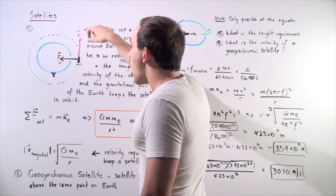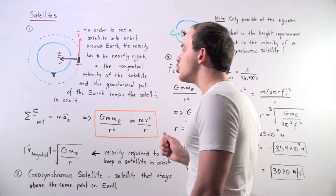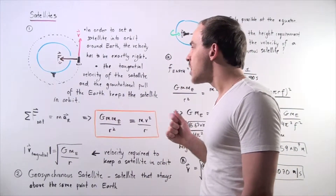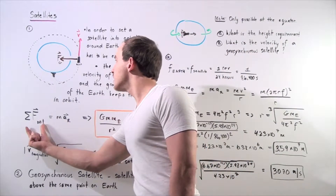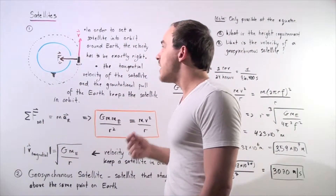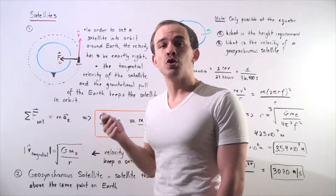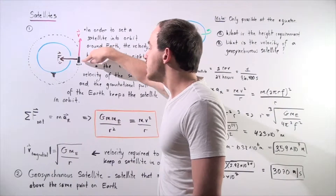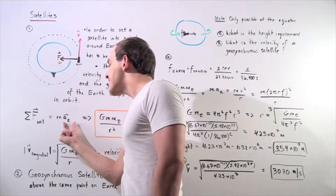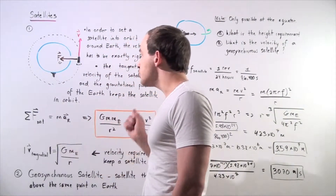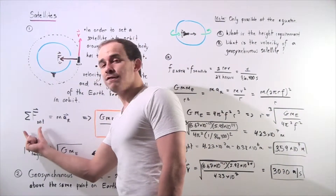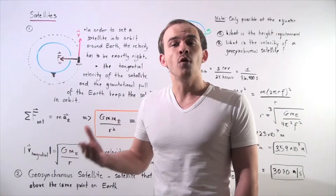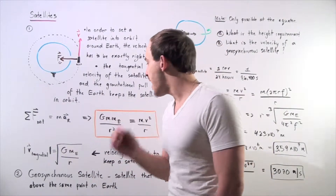These vectors are exactly perpendicular to one another. The net force acting on the object equals mass times centripetal acceleration, because in order for the satellite to orbit the Earth it must have a radial acceleration. The force acting on the satellite is the gravitational force due to the Earth's mass.